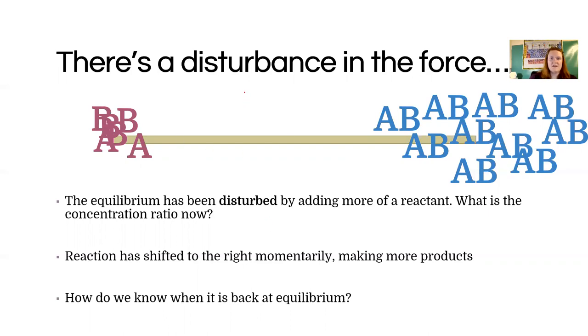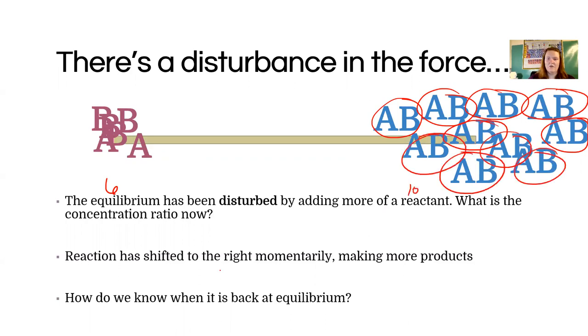Now, back at equilibrium, we must end up with the same ratio. If we count these, we end up with 1, 2, 3, 4, 5, 6 reactants, and 1, 2, 4, 5, 6, 7, 8, 9, 10 products. The absolute total number of molecules has clearly changed since we added matter to the system. But our prior ratio is maintained. We had the same relationship between reactants and products. That's what equilibrium is.